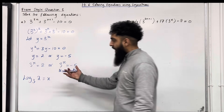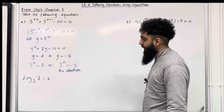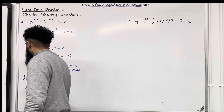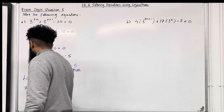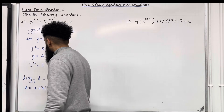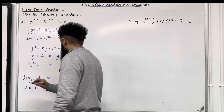Now I can put this into my calculator. If I put this into my calculator, I get x equal 0.631 to 3 significant figures.